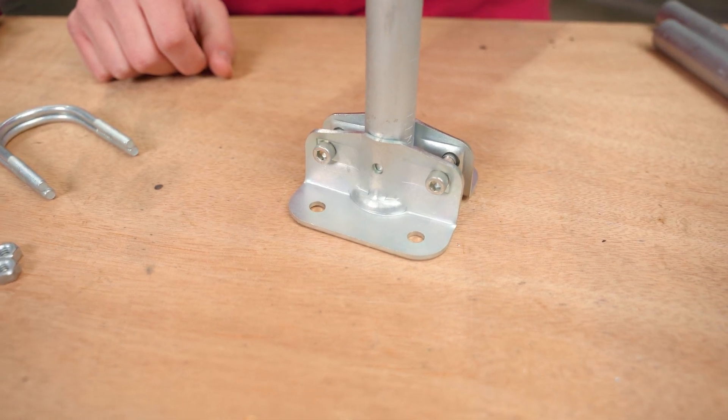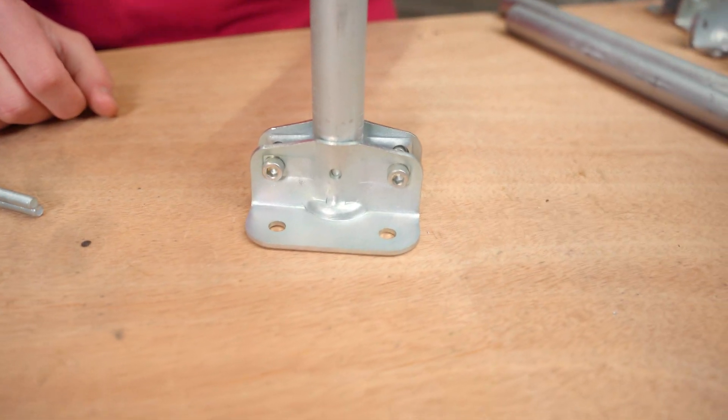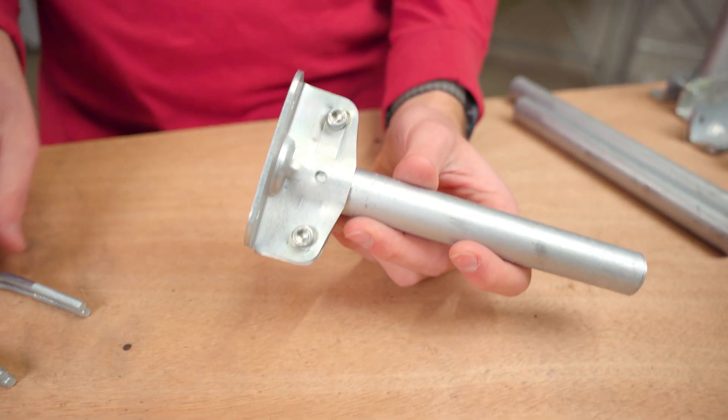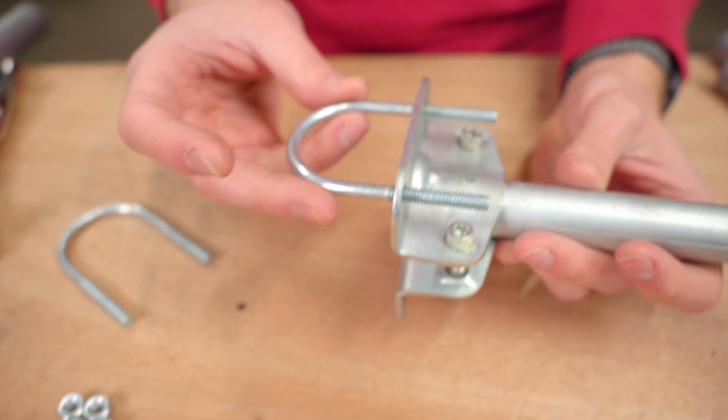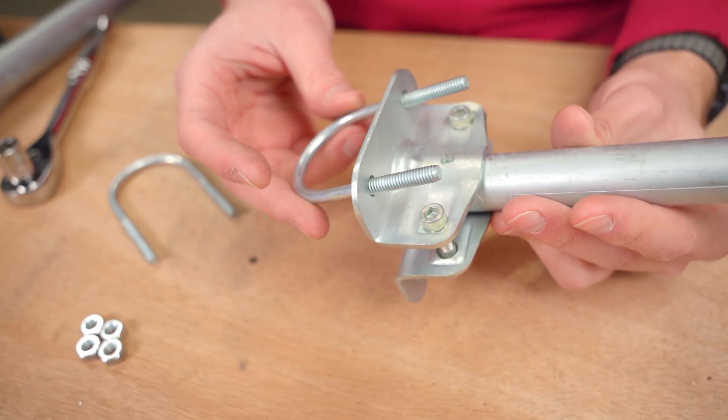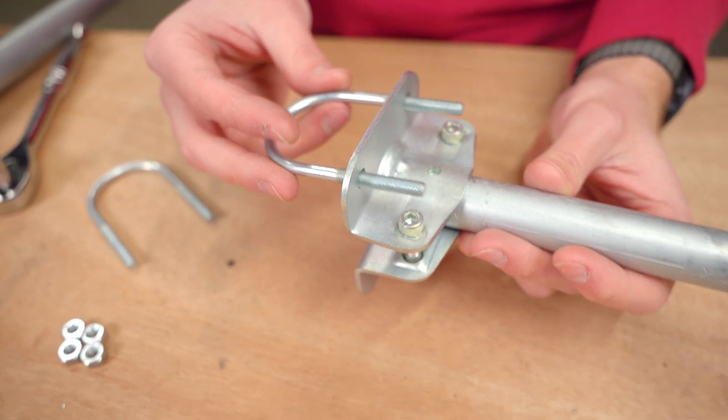This is the Maker Pipe flange that allows you to bolt EMT conduit to flat surfaces. Today I'm going to show you how you can use it to bolt round objects to your EMT conduit builds using a pretty cool solution that I think you're going to find useful and unique for different projects.